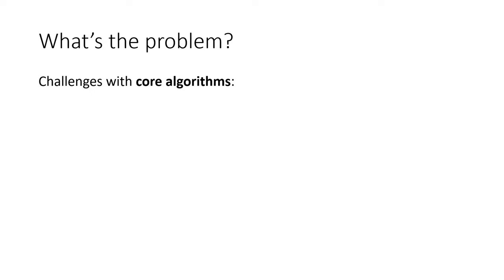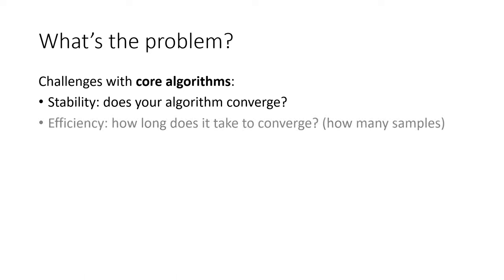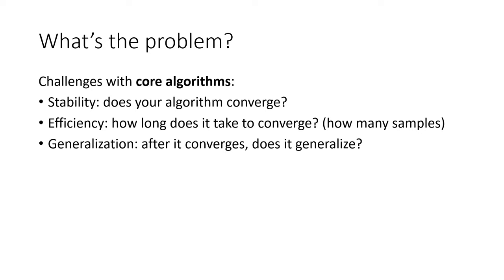Some of the challenges in deep RL are really challenges with the core algorithms — for example, stability. Does your algorithm actually converge? Do you have to tune your hyperparameters very carefully, or will the same hyperparameter setting work across different problem types? Then there's efficiency: how long does it take to converge, meaning how many samples and how much compute do you need? And generalization: after your algorithm converges, does it actually generalize to new problem settings? There are also challenges that have to do with the assumptions of RL, which become much more pronounced in real-world settings.